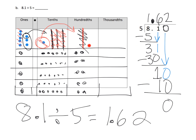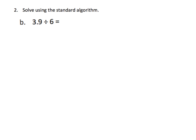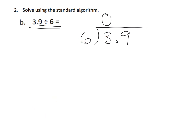Here is our place value chart and here is our standard algorithm — hopefully you can see how the two are related. We want students to master the standard algorithm but have it make sense rather than just be a rule. I love that this next problem is given in a form that requires students to rewrite it. Does 3 ones divided into 6 groups work? No, so we put a zero there and mark the decimal point.